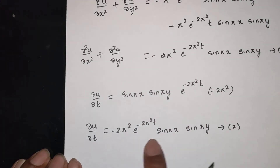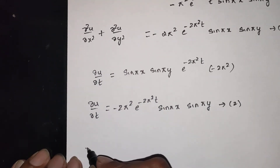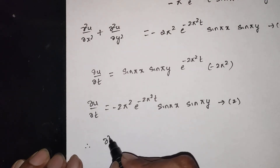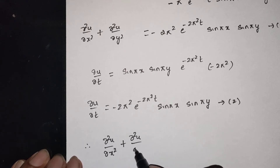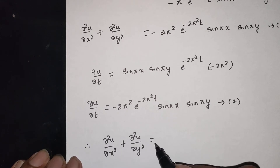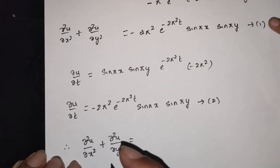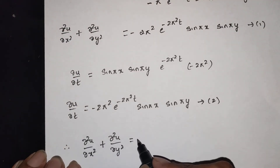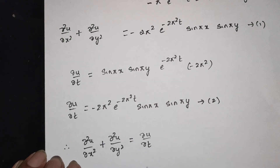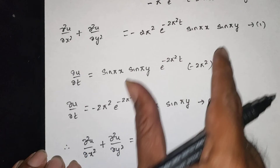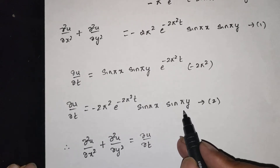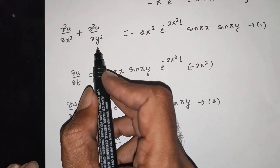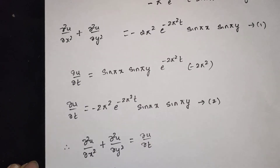From equations 1 and 2, the right hand sides are the same, so we can equate the left hand sides. Since right hands are same we can equate: dou squared u by dou x squared plus dou squared u by dou y squared is equal to dou u by dou t. Both sides equal minus 2pi squared e power minus 2pi squared t sin(pi x) sin(pi y), so the result is proved.